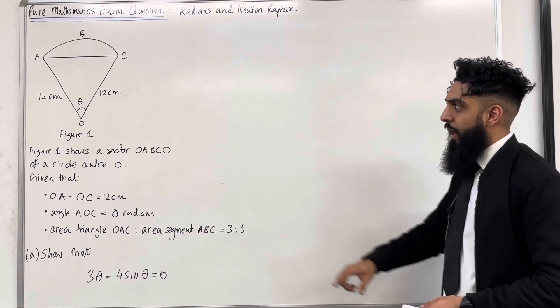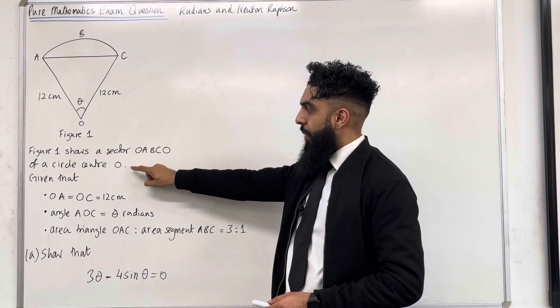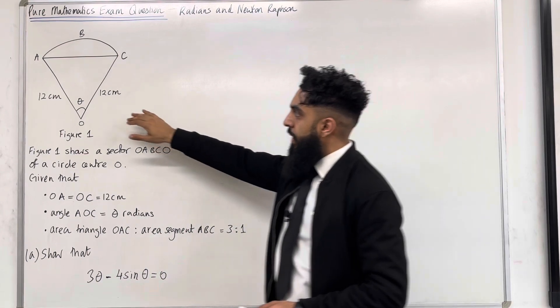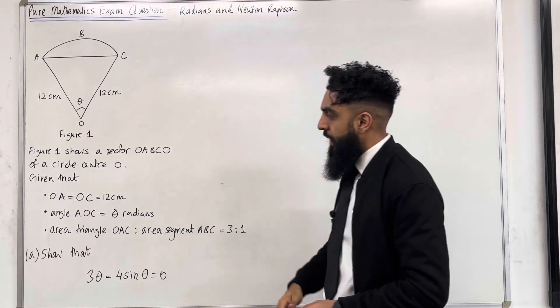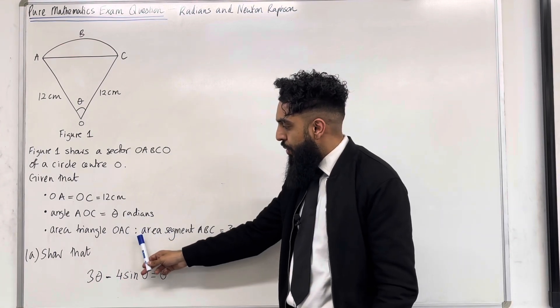Here is the exam question. Figure 1 shows a sector OABCO of a circle centre O. Given that OA equals OC, which equals 12 centimetres, the 12 centimetres is the radius, angle AOC equals theta radians.